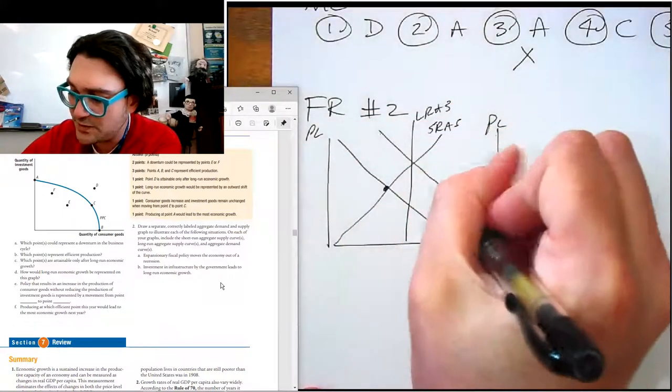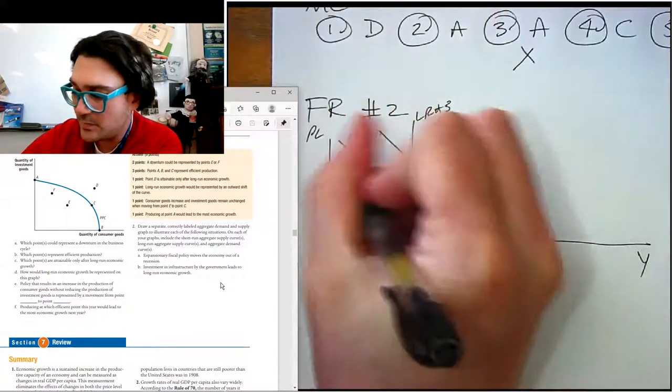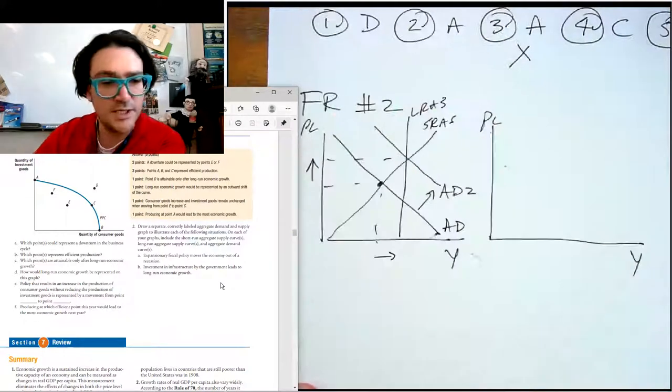It says expansionary fiscal policy moves the economy out of a recession. So we have to start in a recession and then we move out of it with more aggregate demand. Bada bing, bada boom. That one's done.